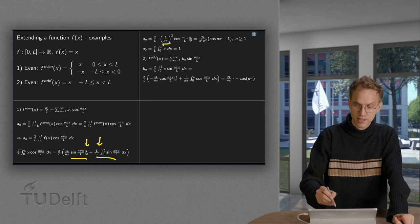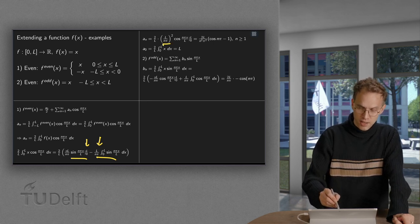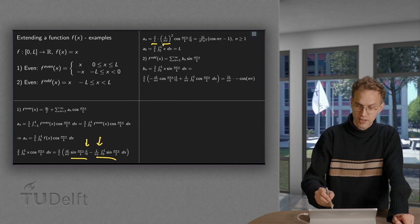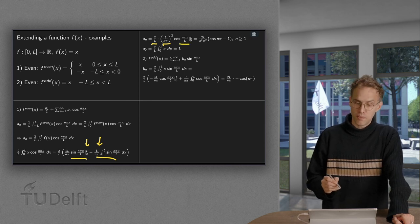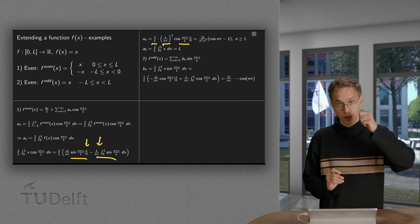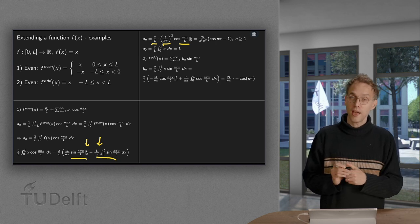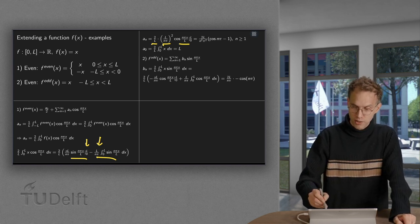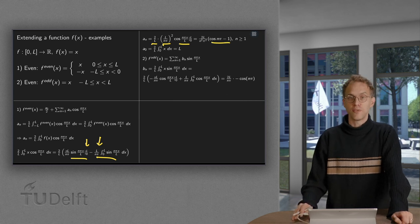So we get l over n pi times l over n pi. And the 2 over l is still there, and we get the cosine. Plug in the boundary values, upper boundary you get cosine n pi, lower boundary equals 1, so cosine n pi minus 1.